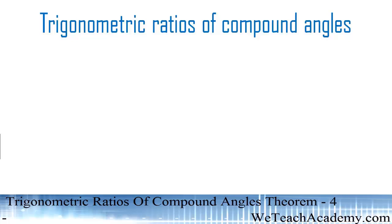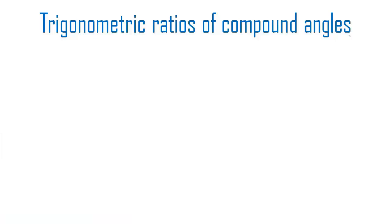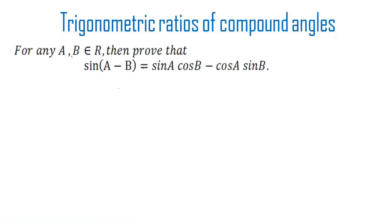Welcome to vdchacademy.com. In this presentation we are going to discuss trigonometric ratios of compound angles. Here, for any a, b belonging to R, we will prove that sin(a - b) is equal to sin a cos b minus cos a sin b. To prove this, let us consider the LHS, that is sin(a - b).